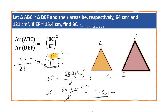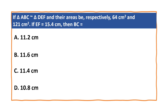The same question can be asked in another way, in multiple choice format. If triangle ABC is similar to triangle DEF, their areas are respectively 64 cm² and 121 cm², and EF is 15.4 cm, then BC is equal to — and we have found that the correct answer is 11.2 cm.